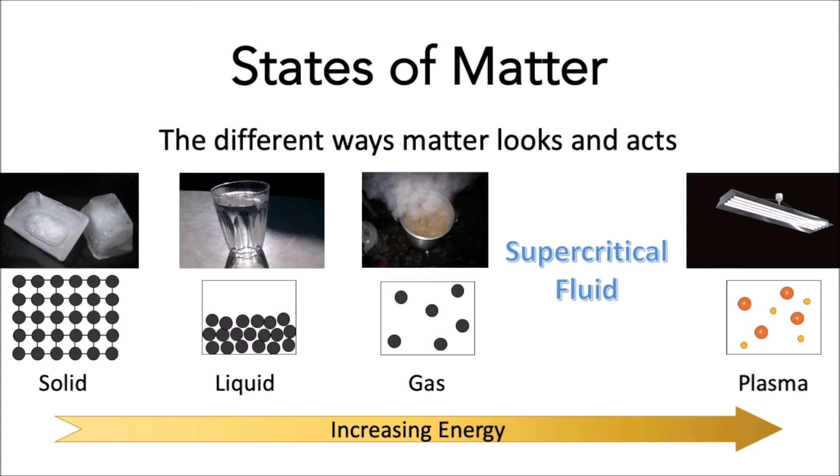In nature, supercritical fluids make up the atmosphere of Jupiter and Saturn, like how air makes up Earth's atmosphere.